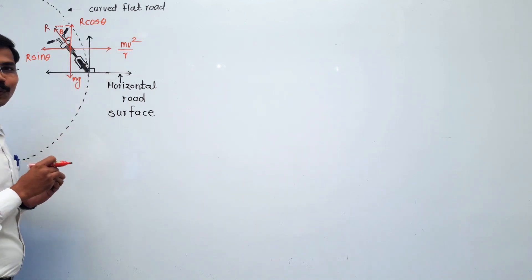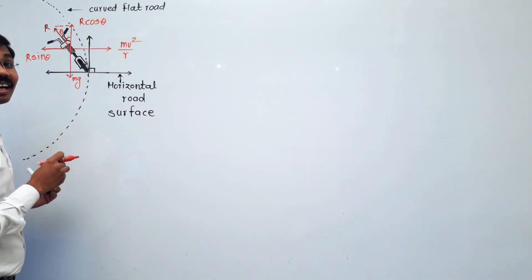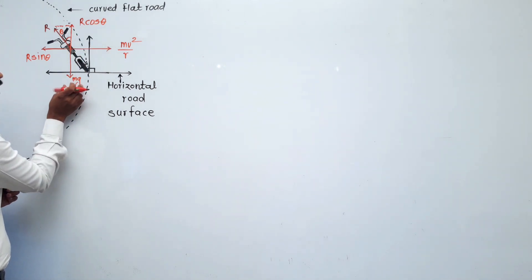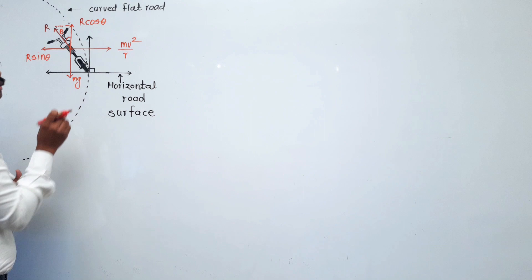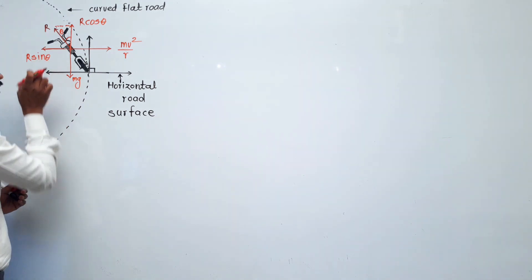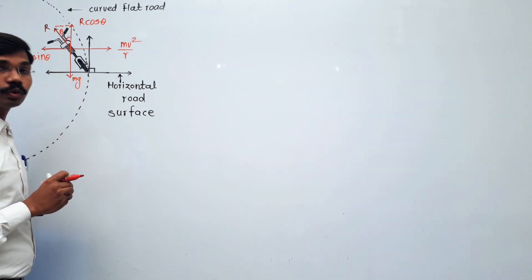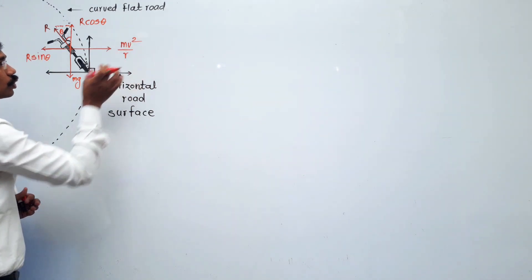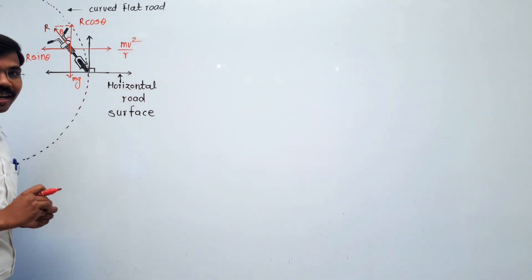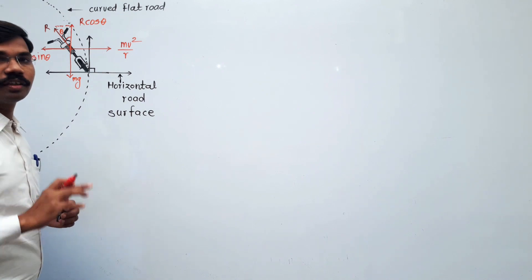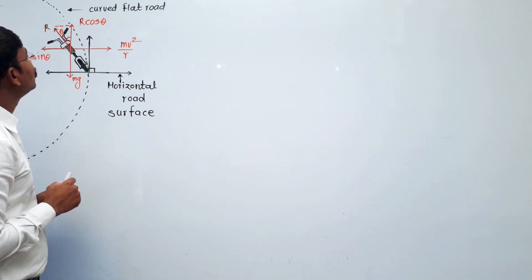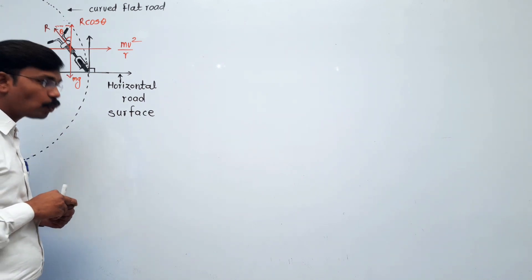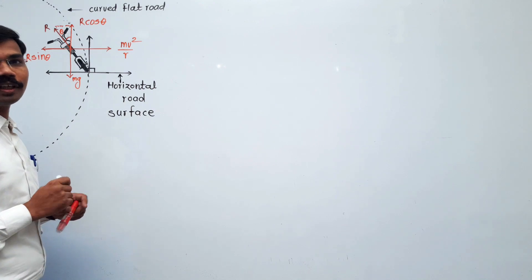The vertical component R cos theta balances the weight of the rider. The horizontal component R sin theta balances the centrifugal force.